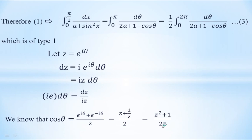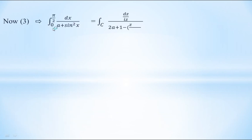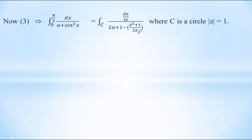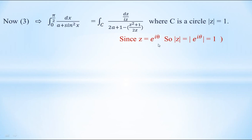Substituting these values, the integral from 0 to π/2 of dx/(a + sin²x) becomes the contour integral over C of [dz/(iz)] divided by [2a + 1 − (z² + 1)/(2z)], where C is the circle |z| = 1. This is because taking modulus of z = e^(iθ) gives |z| = |e^(iθ)| = 1, which is a circle with center 0 and radius 1.